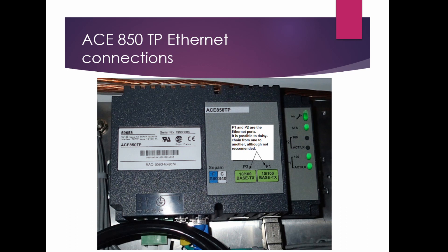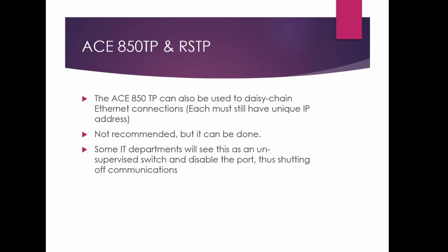On your ACE850TP module, the blue connector goes to the CPAM — marked F — and you connect your incoming Ethernet to either P1 or P2. It's possible to daisy-chain from one module to the next, bringing in on P1 and going out on P2 to the next compartment, but we don't recommend doing that. If you do daisy-chain, each CPAM still must have a unique IP address. Some IT departments will see this as an unsupervised switch and disable the port, shutting off your communications.